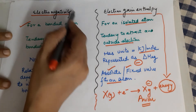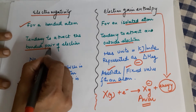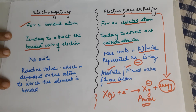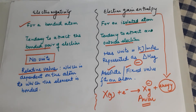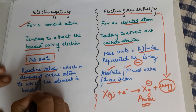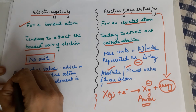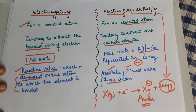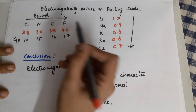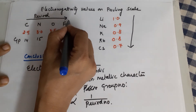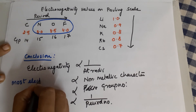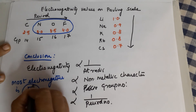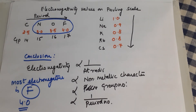In electronegativity, electrons are also being attracted, but it is only the bonded pair of electrons — the electron already used in the bond — that is pulled. It has no units because it is a relative value that changes depending on the atom to which it is bonded. You cannot say any atom's electronegativity is permanently fixed. The Pauling scale gives reference values, but these are relative. You should remember that the most electronegative atom is fluorine, with a Pauling scale value of 4.0.